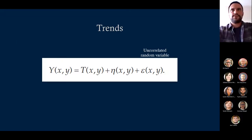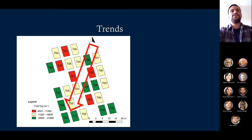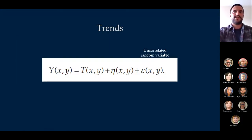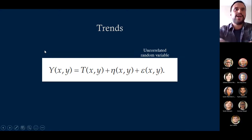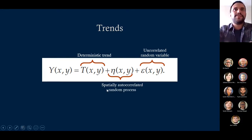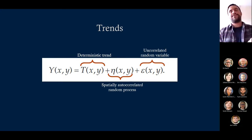We can calculate the trend mathematically. When we see a formula like this, we have two options: run away, or take it step by step. We'll do the second. We have the deterministic trend here — in our case this will be the organic carbon — plus some random processes representing spatial autocorrelation, and then uncorrelated error that is not associated with the variable.